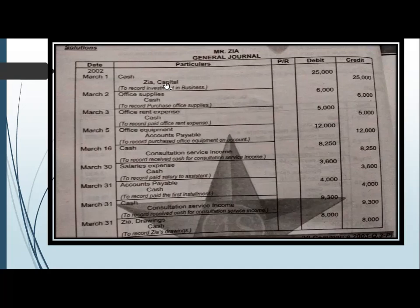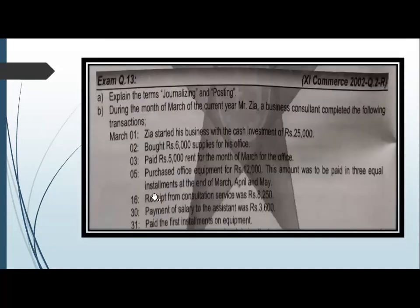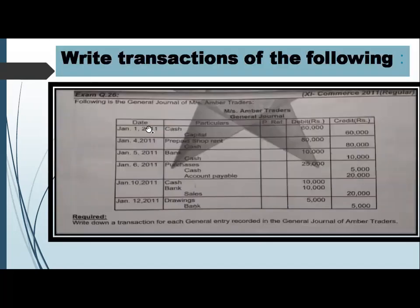The same treatment applies to the capital account. When you make the capital T-account, simply record 25,000 on the credited side, and its balance c/d will go to the debited side. This is the main content and essence of understanding the ledger. Exam question number 13 — you have to do this in your home registers.